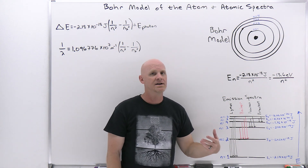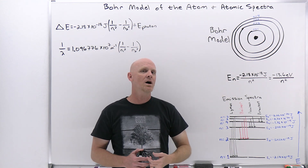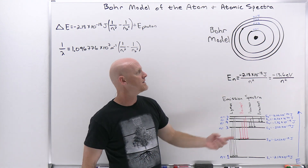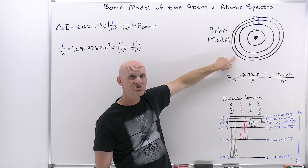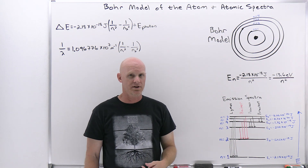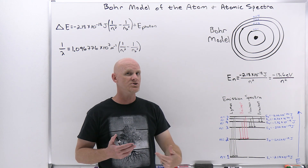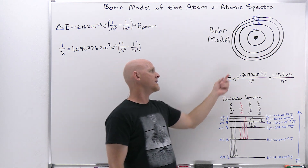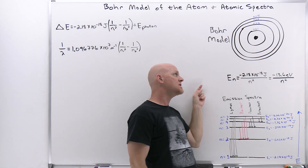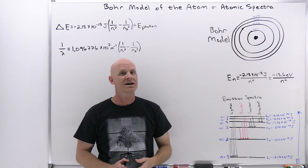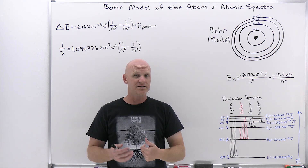The third tenet is that electrons can jump between orbits, and when they do, it is always accompanied by a photon of light. Jumping from a lower potential energy orbit closer to the nucleus outward to a higher potential energy orbit requires absorbing a photon, with the photon's energy exactly equal to the difference in energy between the two orbits. If the electron relaxes from a higher energy orbit further from the nucleus down to a lower energy orbit closer to the nucleus, it emits a photon of exactly that energy difference.